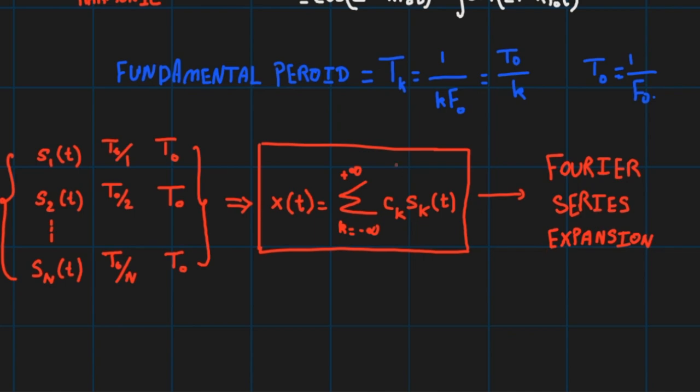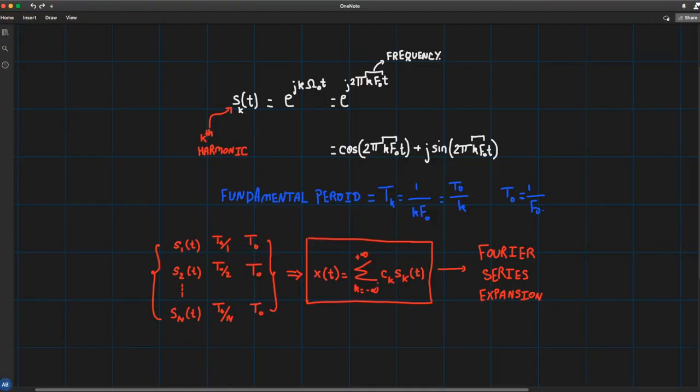Your main concern over here is to find out the c_k's that give you this approximation or expansion. So in the next one we'll be talking about discrete-time complex exponentials, and I'll see you in the next lecture. Thanks for watching.